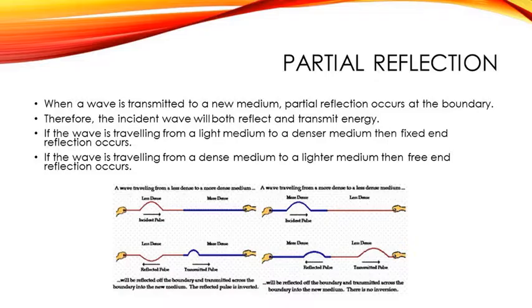Partial reflection. When a wave is transmitted into a new medium, partial reflection occurs at its boundary. Therefore, the incident wave will both reflect and transmit energy. If the wave is traveling from a light medium into a denser medium, fixed end reflection occurs. If the wave is traveling from a dense to a light medium, then free end reflection occurs.